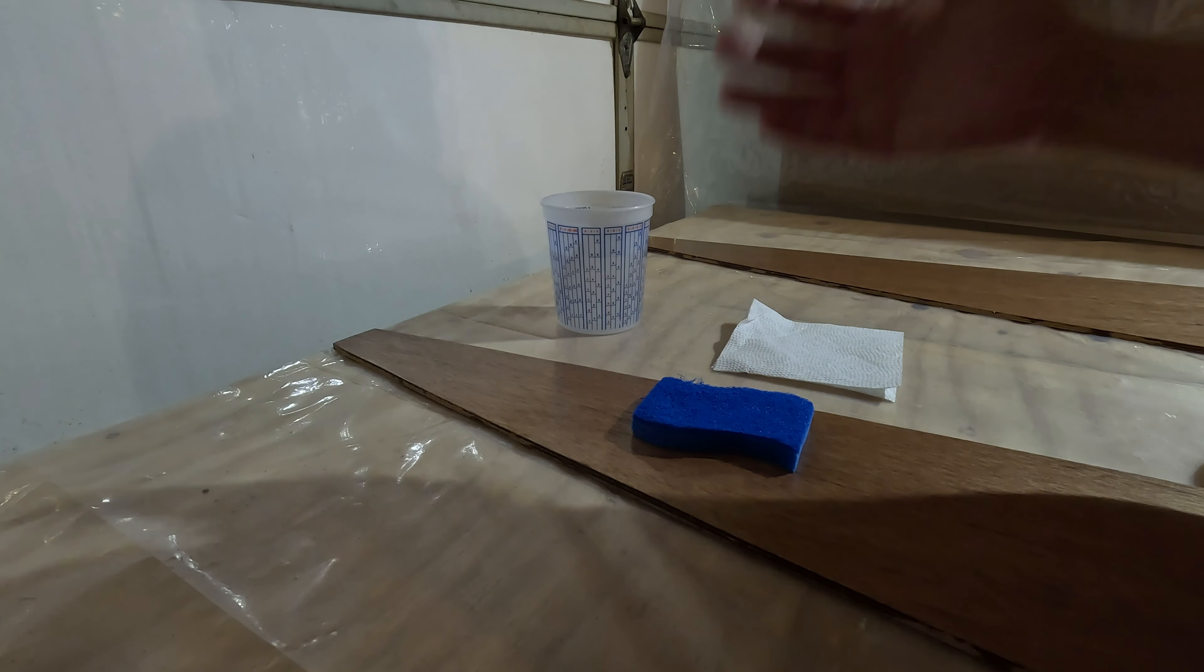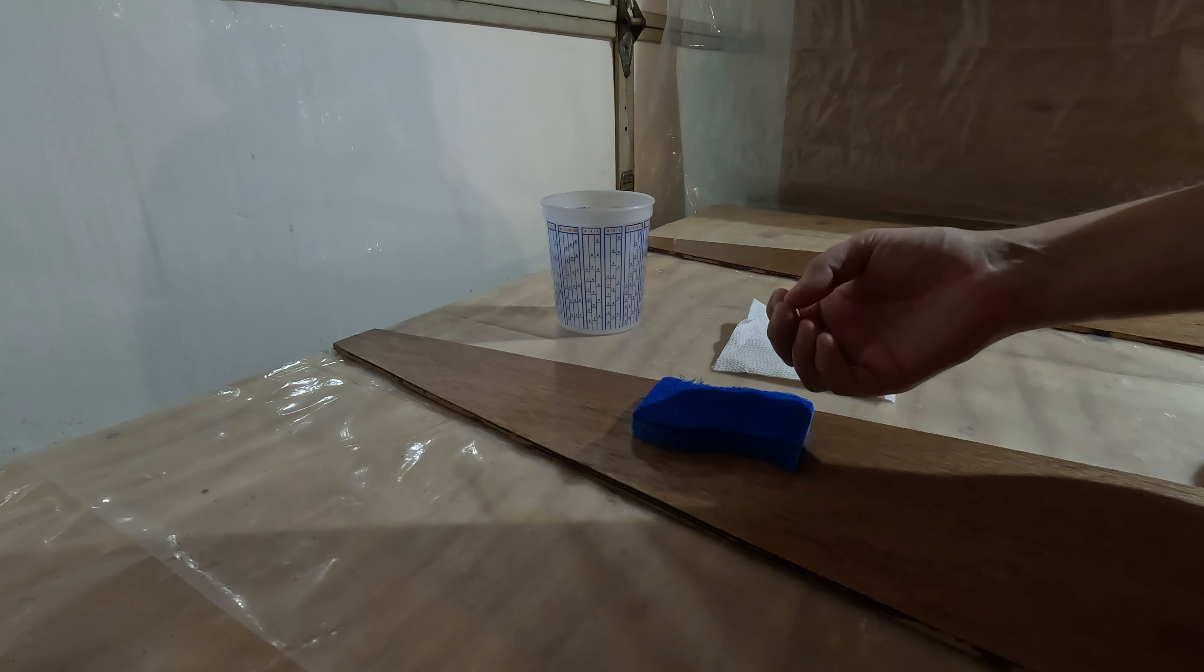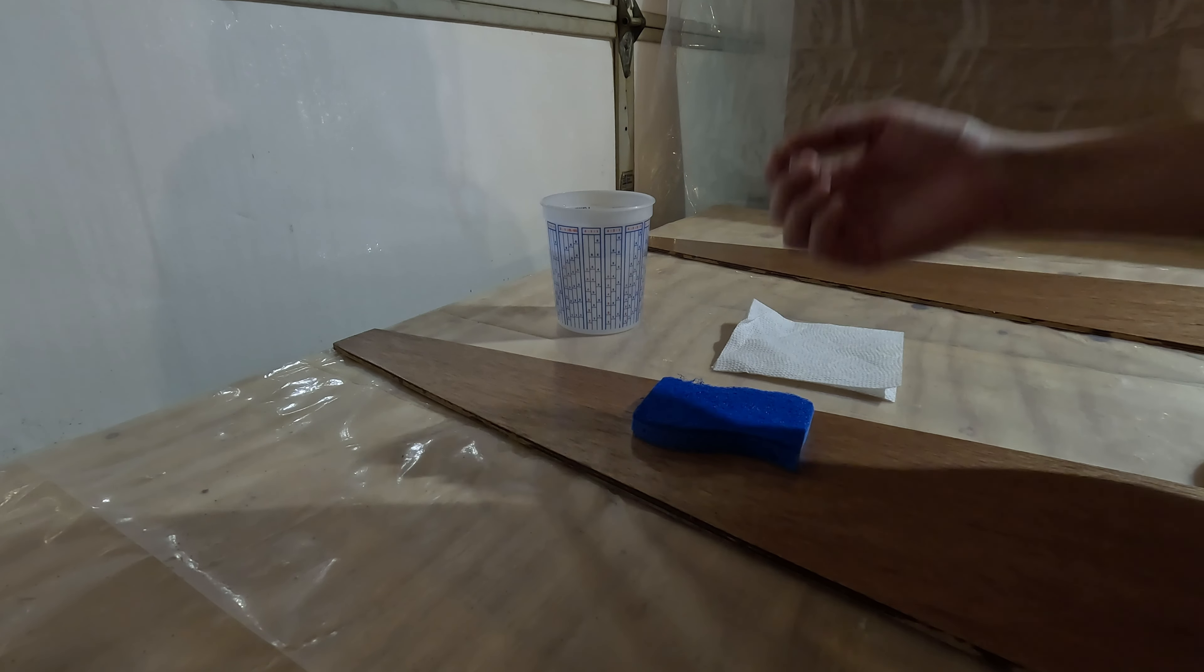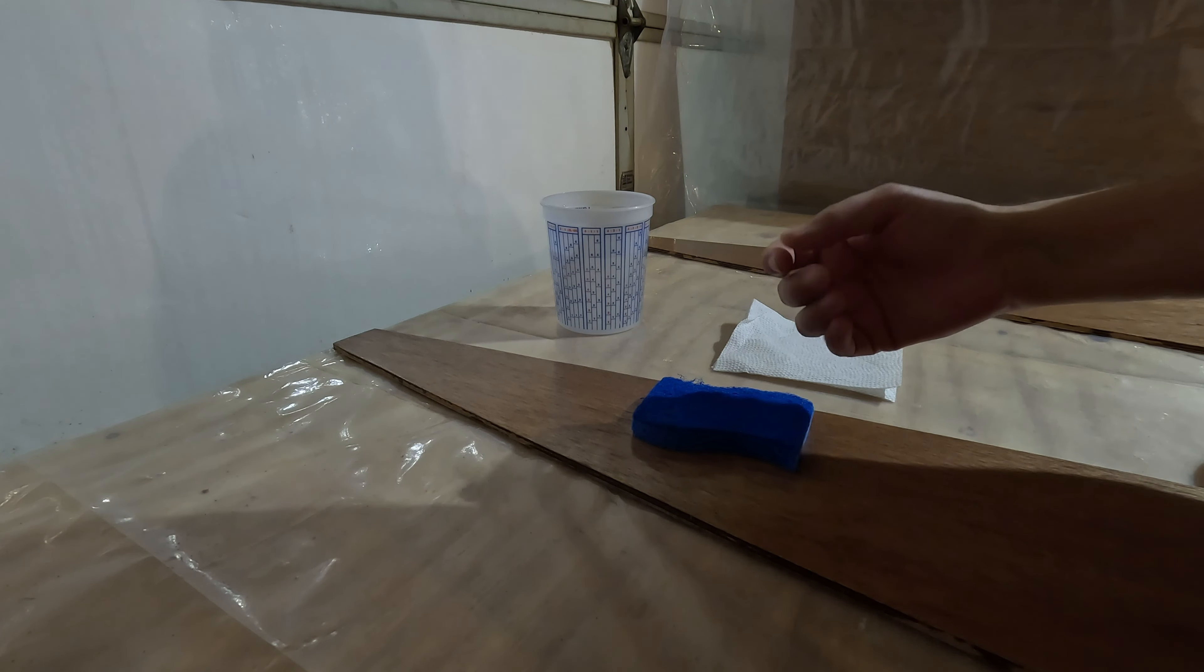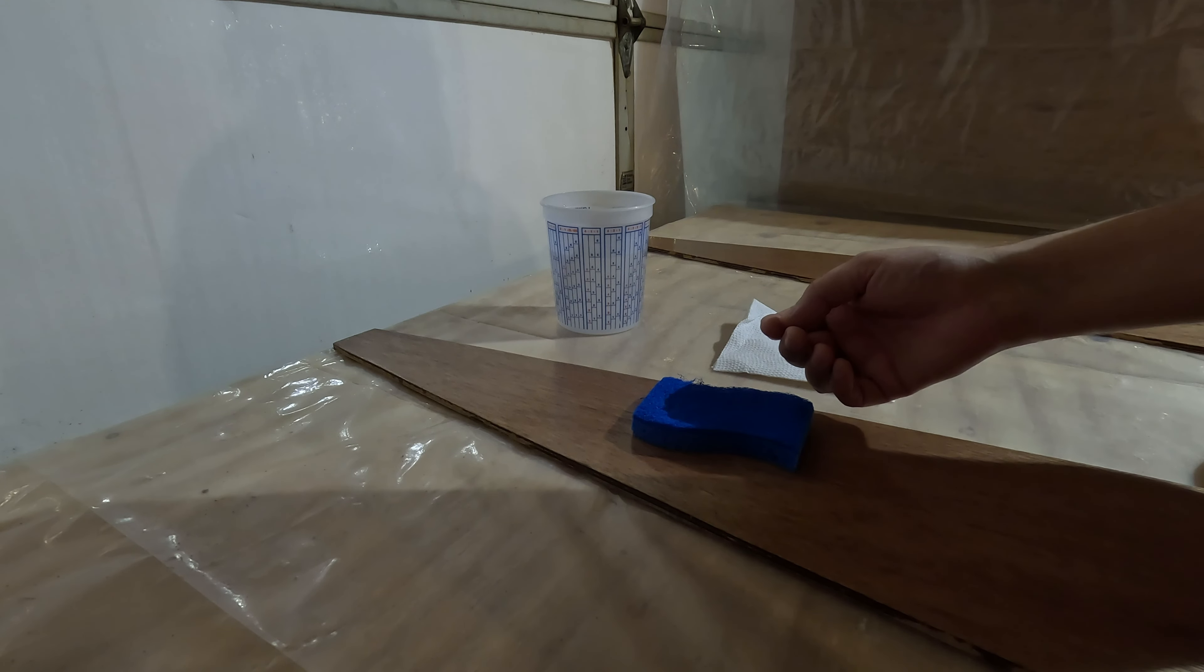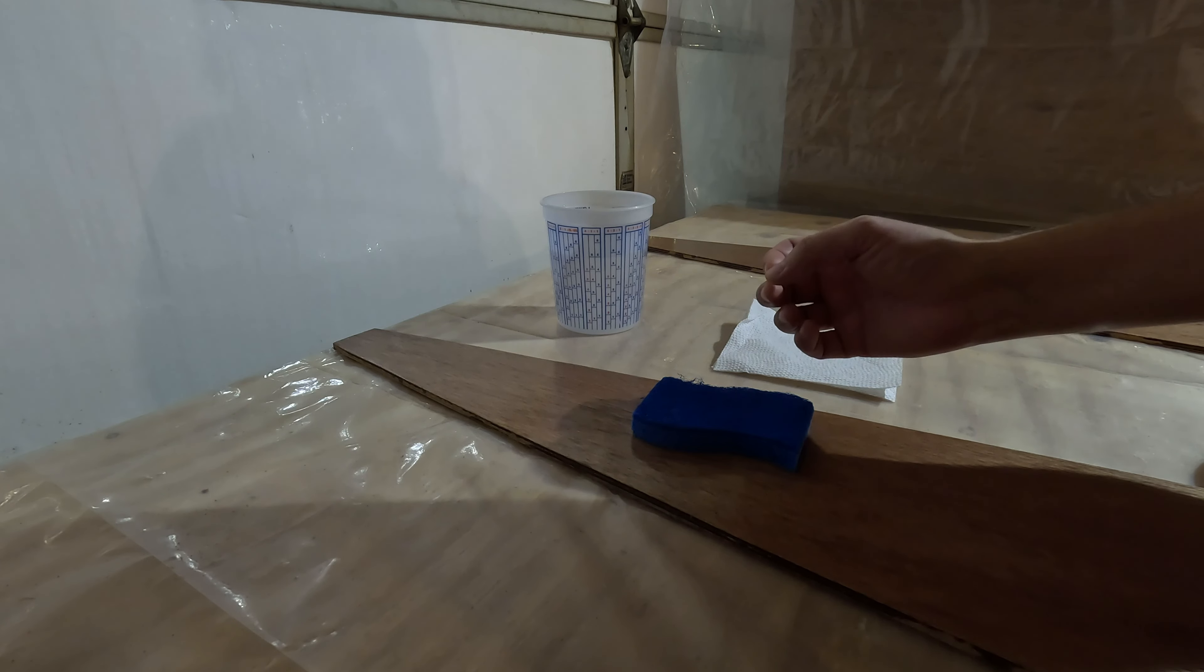And what it is, is the hardener in epoxy should form a chemical reaction with the resin. And if you have cooler temperatures with higher humidity, and strangely enough, if you have a lot of carbon dioxide around, then that hardener can bond with the humidity in the air and the carbon dioxide instead of bonding with the resin.